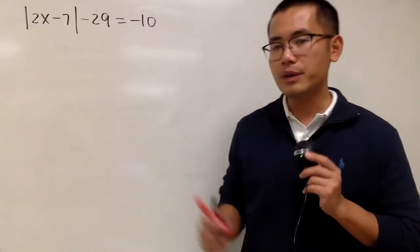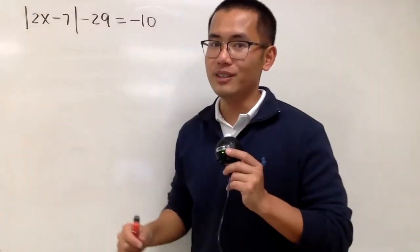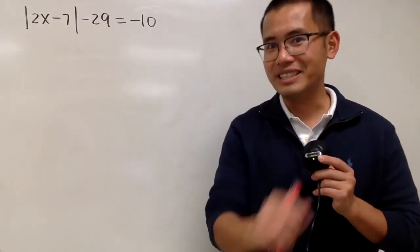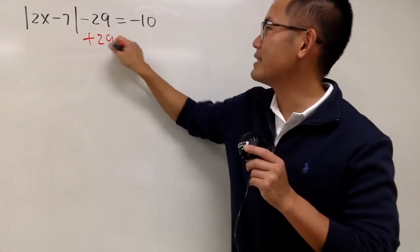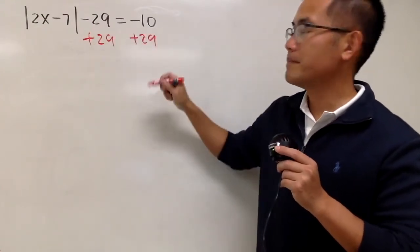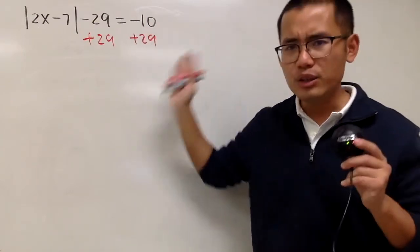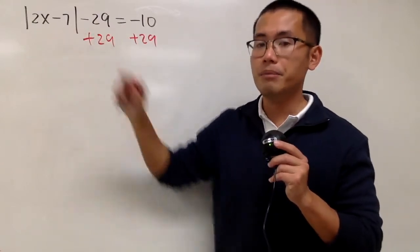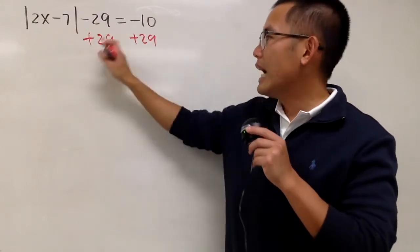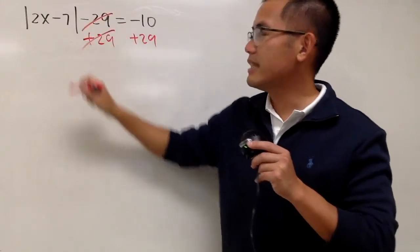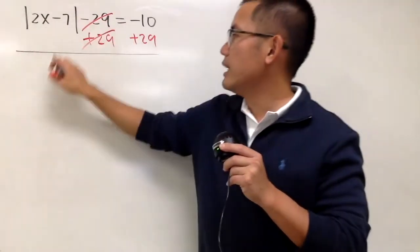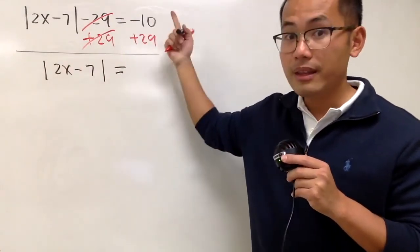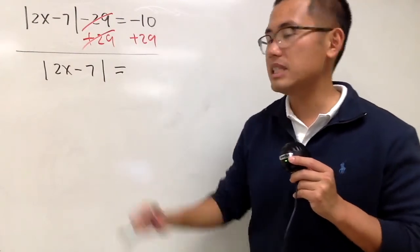To solve this absolute value equation, we must always isolate the absolute value first. Here we have minus 29, so we add 29 on both sides. Be really careful — do not just say the right-hand side is negative 10 and conclude no solution. You must isolate the absolute value first. After adding 29, we end up with absolute value of 2x minus 7 equal to negative 10 plus 29, which is positive 19.